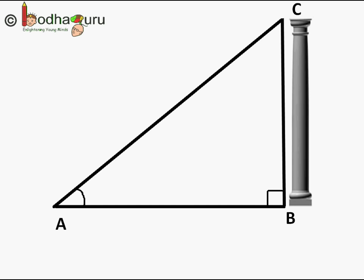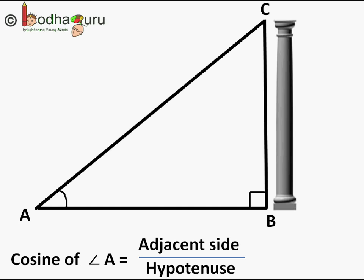Now let us learn our second trigonometric ratio. We know trigonometric ratio is the ratio of two sides of a right angle triangle. So the next trigonometric ratio is cosine.